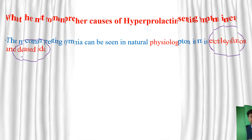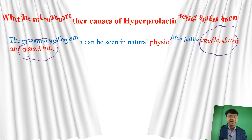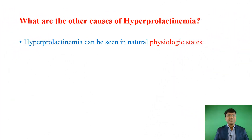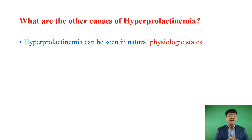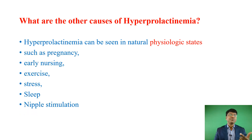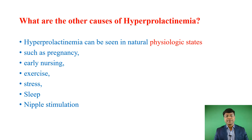What are the causes of hyperprolactinemia? The causes can be divided into physiological and pathological. The physiological causes include pregnancy, nipple stimulation, early nursing, exercise, sleep, and stress. These are the physiological causes for hyperprolactinemia.